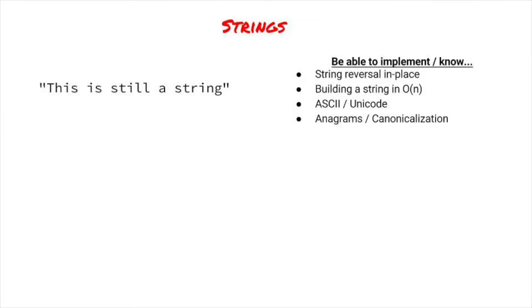Let's move on to strings. Here are a few common things to know for strings. Be able to reverse a string in place, if your language allows it. Some languages have immutable strings, such as Java and Python. In those languages, be able to reverse an array in place instead. Know ways of building a string in O of n one character at a time instead of brute force O of n-squared using string addition. Be familiar with ASCII and Unicode and how that affects some of these algorithms. Also, anagrams appear frequently as string questions. Be familiar with the idea of canonicalizing an object in some way.